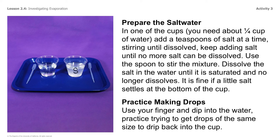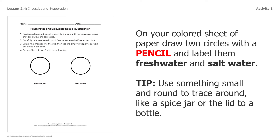You can just use your finger for this — dip your finger in the container of water and practice trying to get drops of the same size to drip back into the cup, because you want consistent drop sizes for the experiment. On your colored sheet of paper, draw two circles with a pencil and label them 'fresh water' and 'salt water.' Make sure both circles are the same size — I'd recommend tracing around something small and round, like a spice jar or the lid to a bottle.